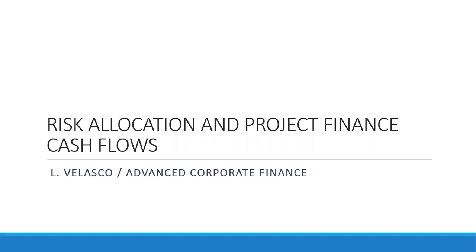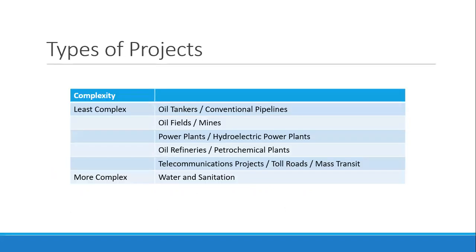We discussed that there are several types of projects which can be project financed. These projects are usually standalone in nature, meaning there's only one asset class, one asset type. And that asset has a specific output, and that output will be the source of the cash flows used to pay off the loans of the project.